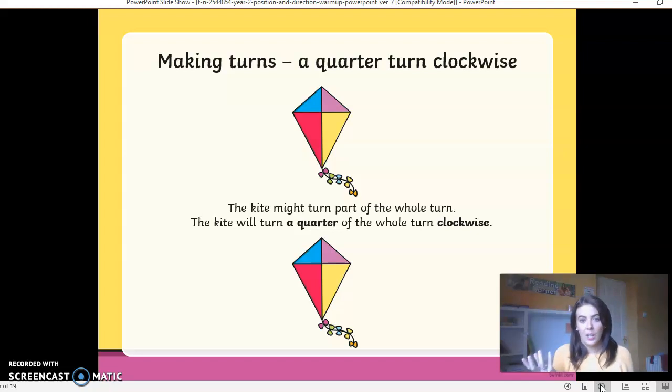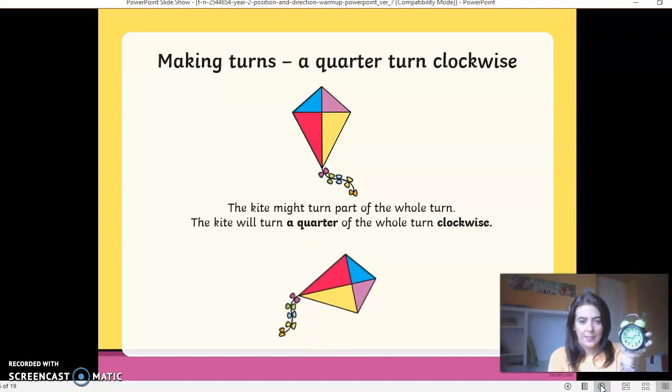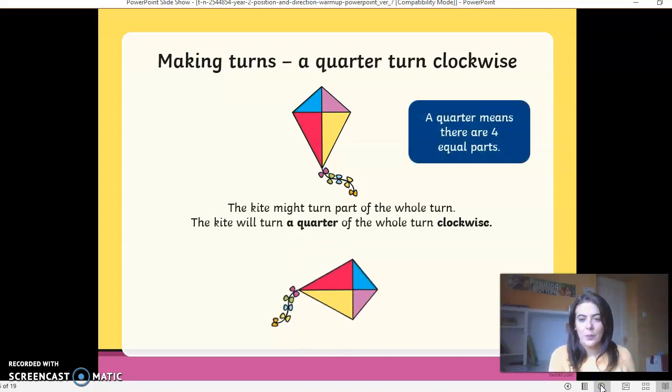So if you have your clock there, you can take it out and have a look and see. I've got my small one here. I know we're going clockwise, I know it's going to be going this way. And if it's quarter, I think I know where the kite might end up. Look at that. Quarter means there are four equal parts, which we know, so the kite has just went one quarter.